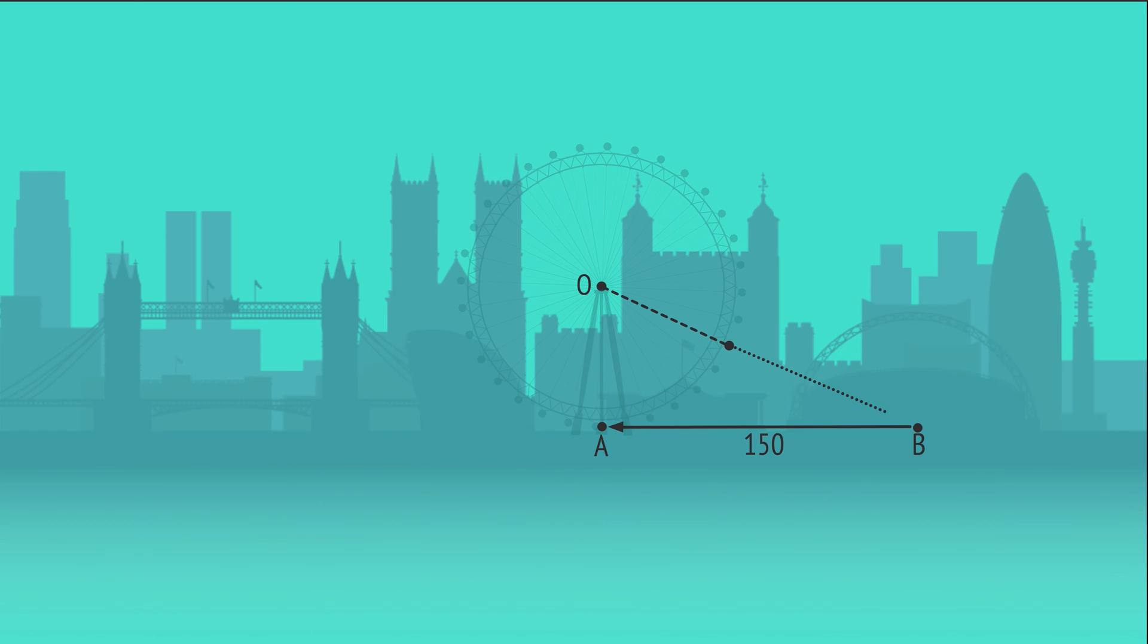If we draw a line from O to B intersecting the circle at C, then the minimum distance will be this length BC, which we'll label x. The triangle OAB is right-angled since the radius OA meets the tangent AB at 90 degrees.